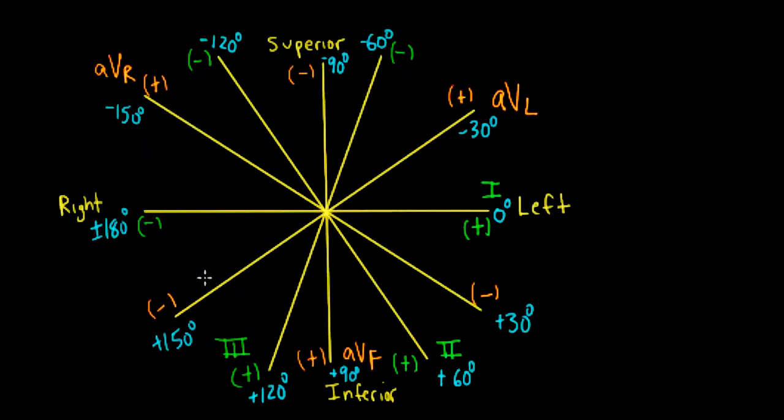So let's review the frontal plane. Frontal plane is superior up top, inferior, and then left and right. And we have our bipolar limb leads, leads one, two, and three. They're all 60 degrees from each other because they're derived from that Einthoven's triangle, which is an equilateral triangle.